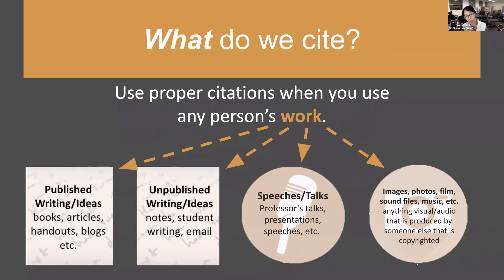For example, if your professor said something in a lecture and you wrote it down, when you cite that in your paper, you are citing your professor's speech or presentation. That is not your own idea. So speeches, talks, and presentations all need to be cited. Unpublished writings can also cover email and other communications that are not your own. You also need to cite images, photos, films, sound files, and music — anything visual or audio produced by someone else that is copyrighted or not your own, especially if you're using it to prove something.